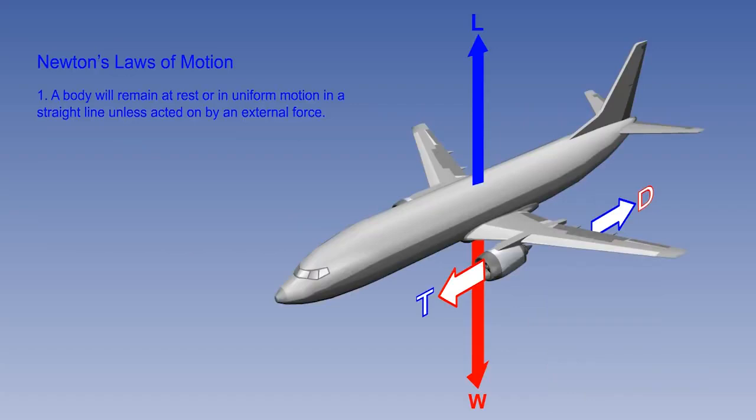We will now look at Newton's laws of motion, and give examples of why they are relevant to principles of flight. The first law is that a body will remain at rest or in uniform motion in a straight line, unless acted on by an external force. It is highly relevant when looking at an aeroplane in steady straight flight, because to fly in a straight line at the same speed, the opposing forces must be equal.